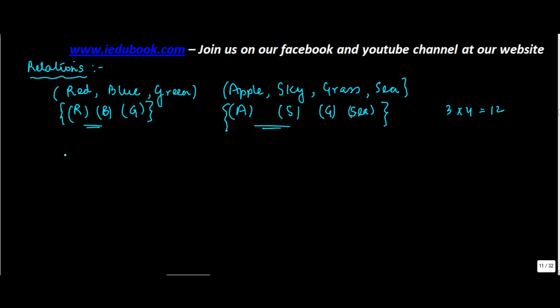If you were to represent these by way of, let's say, two circles, you get R, B, G here, you get A, S, G, C. Now if you start forming pairs, you get R A.